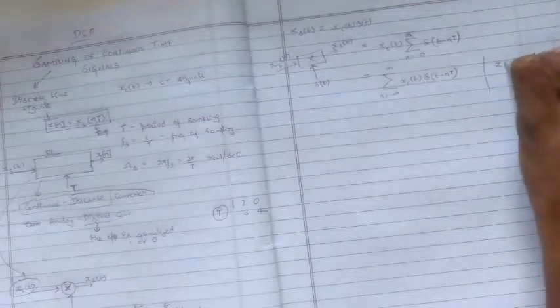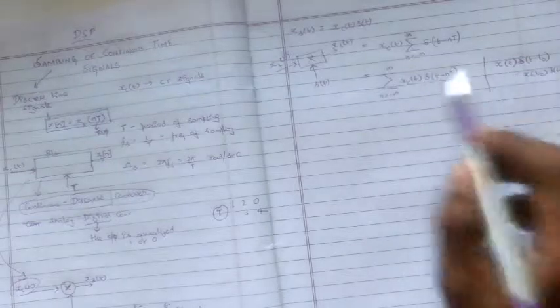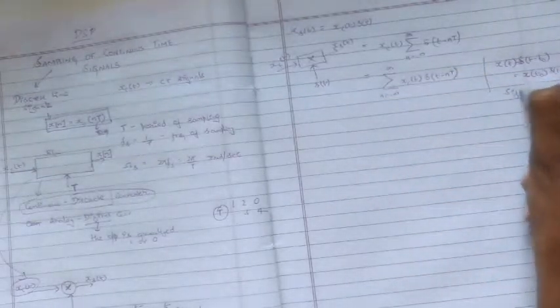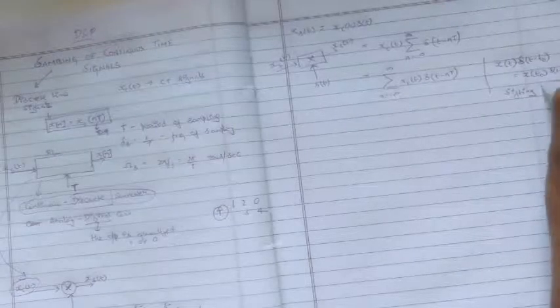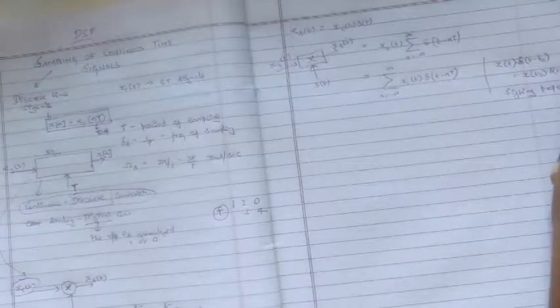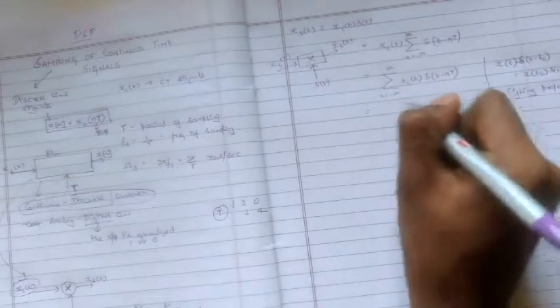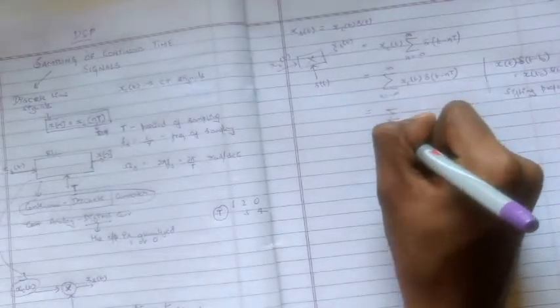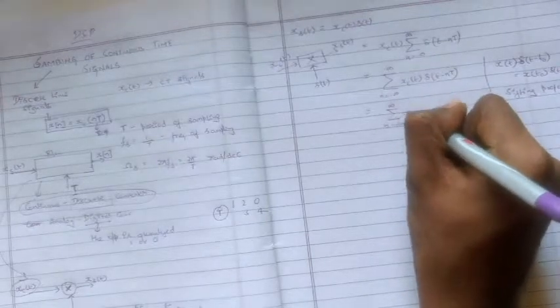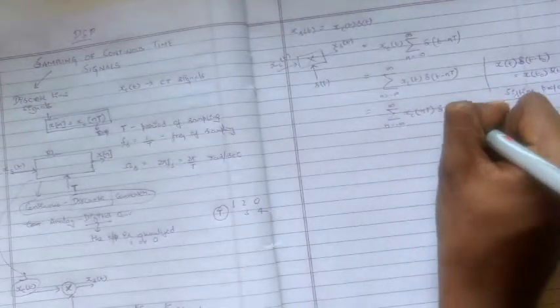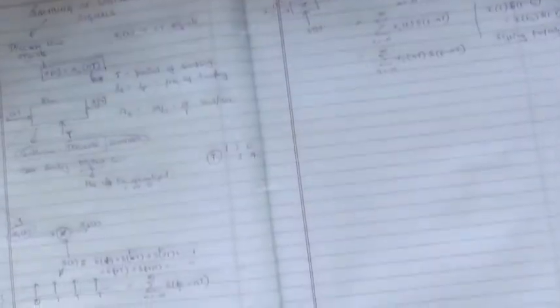We have this property: x of t into delta of t minus t not will actually give us x of t not into delta of t minus t not. So applying the same property here, it's called sifting property. It's not shifting, it's sifting. Sifting property. So using the same property here, we get this as summation n equal to minus infinity to infinity xc of nT into delta of t minus nT.